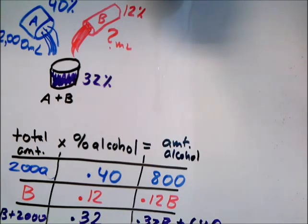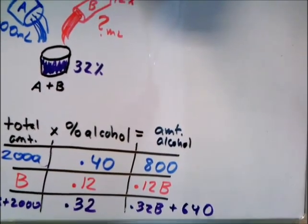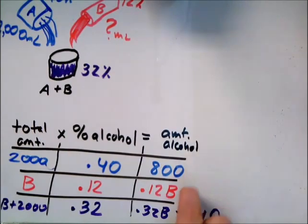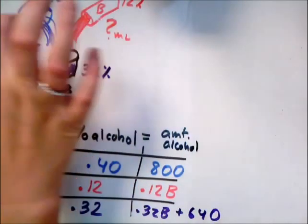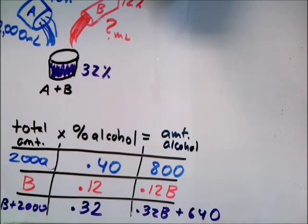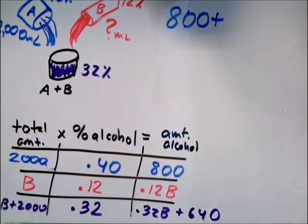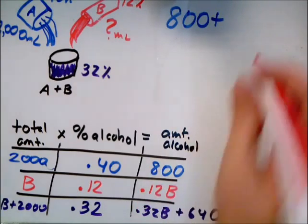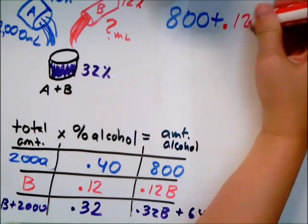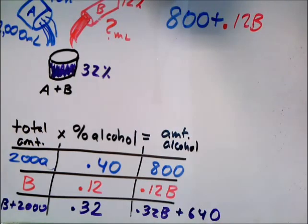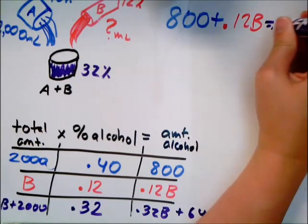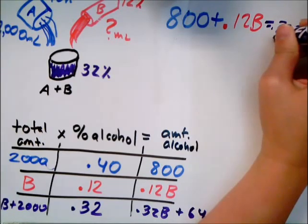So where's my equation come from? Once you get kind of one of these set up, all of them are the same, they just have different numbers in them. My equation comes from, I'm dumping these two things together. So just like here, this plus this gives me my resulting mixture. So I know that the 800 plus the 0.12B, so how much alcohol is in this one and how much is in this one, should add up to the amount I want to end up with in my mix. So it's always the two you're putting together add up to give you the resulting mixture.